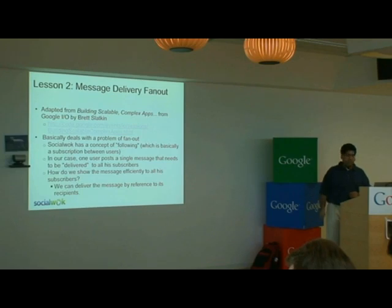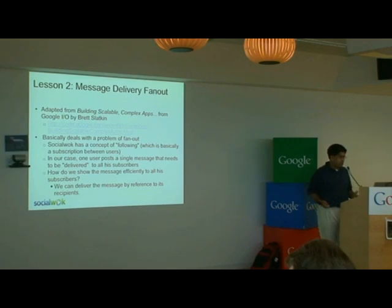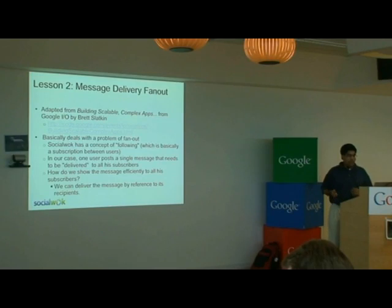The second lesson we learned: message delivery fan-out. Social Walk is a feed-based application, so we need to deliver all these feed messages to all the users that are basically subscribed to that presence. Like in Facebook, I need to see all my friends' statuses — what they're doing, their activities. So how do I deliver these messages effectively?